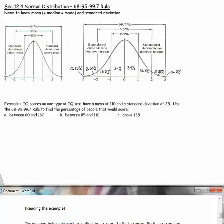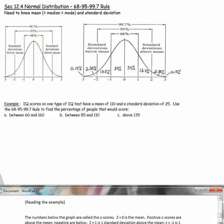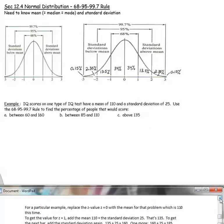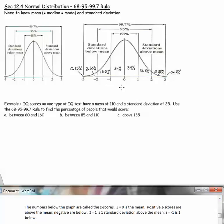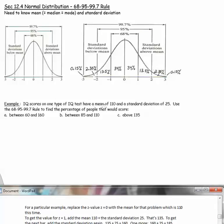Our example here says IQ scores on one type of IQ test have a mean of 110 and a standard deviation of 25. Use the 68-95-99.7 rule to find the percentage of people that would score in each of these ranges. The numbers you see below the graph are called z-scores. z equals 0 represents the mean. Positive z-scores are above the mean, negative are below. z equals 1 means one standard deviation above the mean. z equals negative 1 is 1 below.